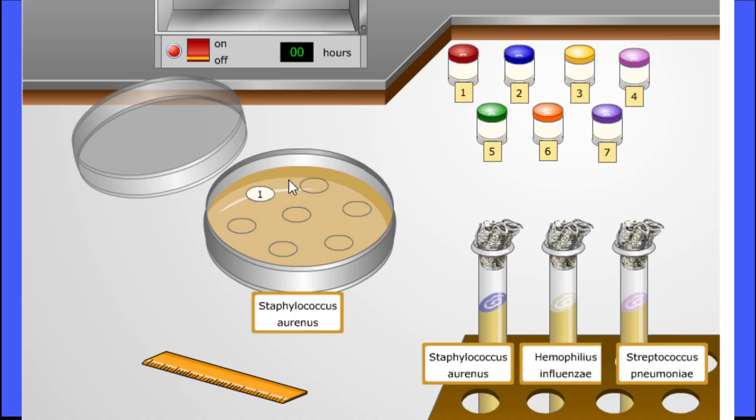Next, we can place our discs. Disc 1 is used as a negative control. It is simply the filter disc placed in water, which should have no antimicrobial effectiveness.